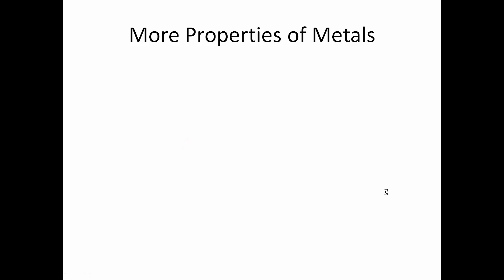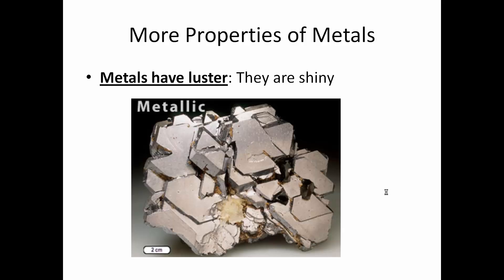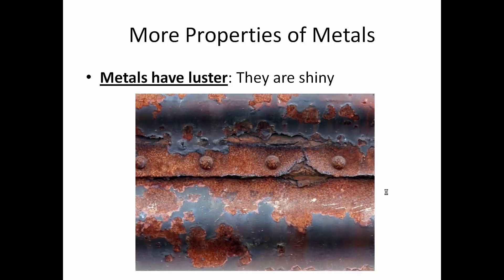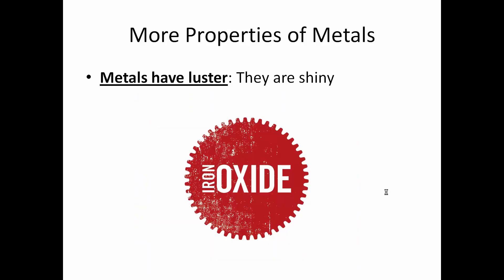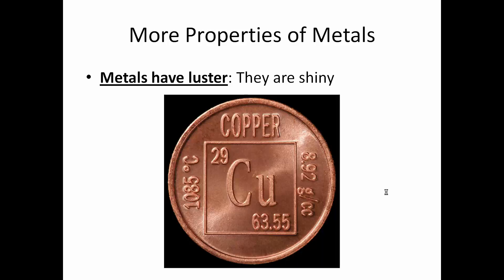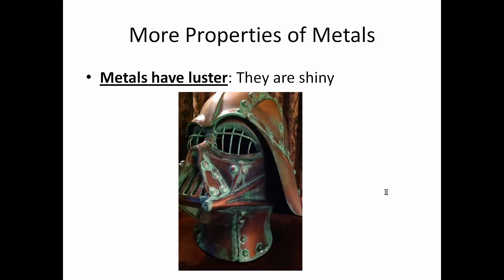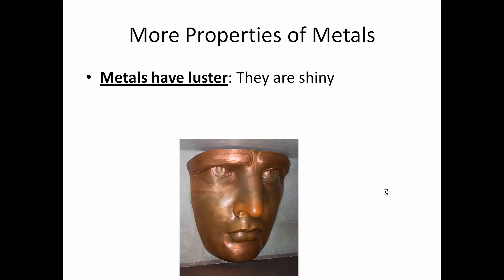Metals have luster, which means they are shiny. Not all metals have the same type of shine, but they all have luster. If you take iron and rust it, that red stuff is iron oxide — iron oxide isn't shiny, but the iron itself is. Same with the Statue of Liberty: she's covered in copper, but you see verdigris on the surface — that green stuff is copper oxide, not the copper itself. The copper is shiny.